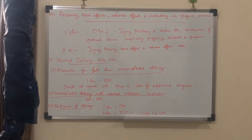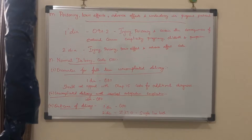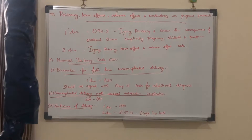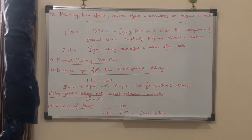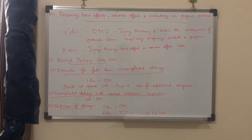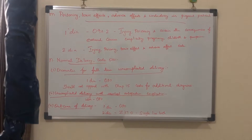The next is the normal delivery code O80, encounter for full term uncomplicated delivery. If there is no complication in pregnancy and delivery, the principal diagnosis is O80. It should not be appended with other chapter 15 codes for additional diagnosis, but can be appended with codes from any other chapter. For uncomplicated delivery with resolved antepartum complication, if there is no complication at the time of discharge, assign O80 as principal diagnosis and Z37.0, single live birth, as secondary diagnosis.